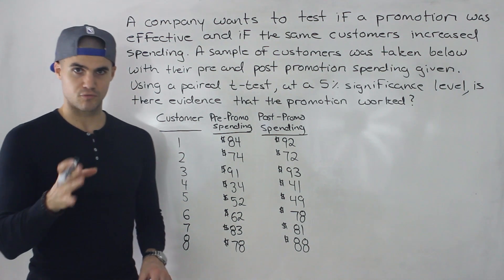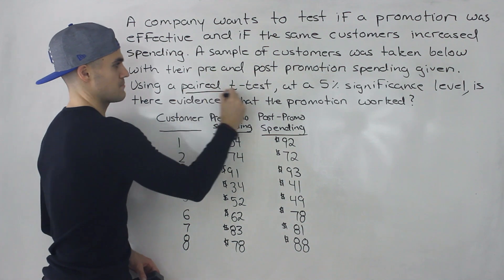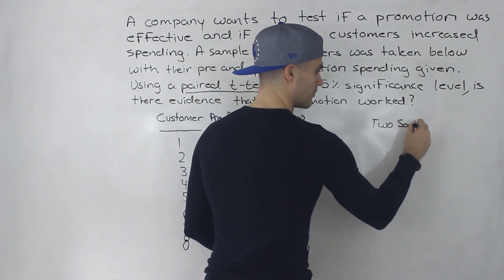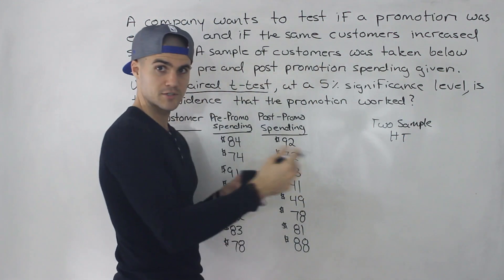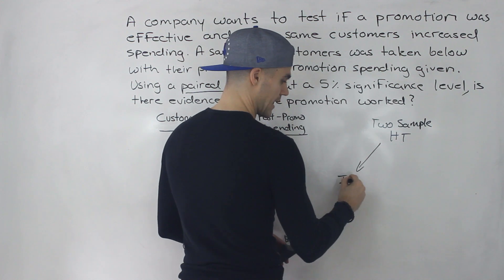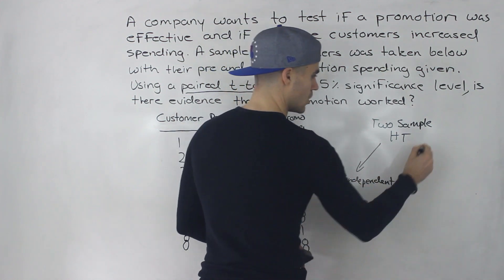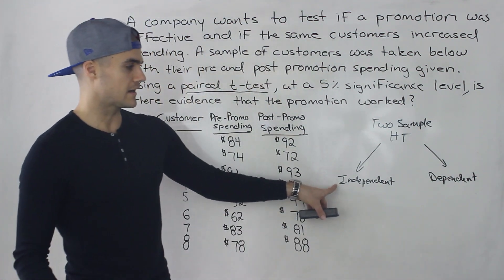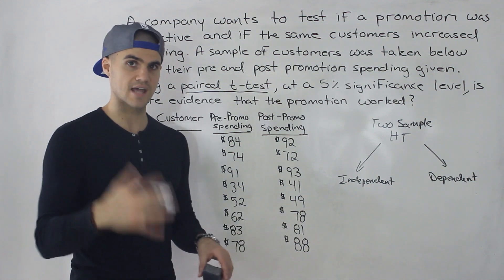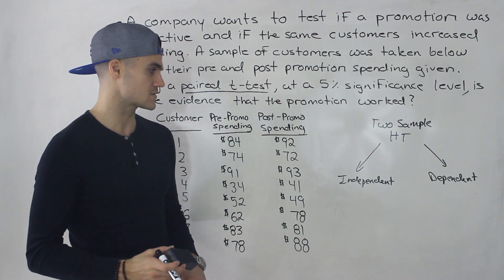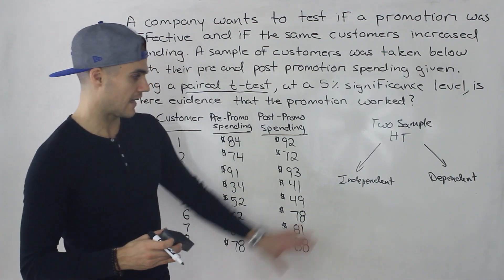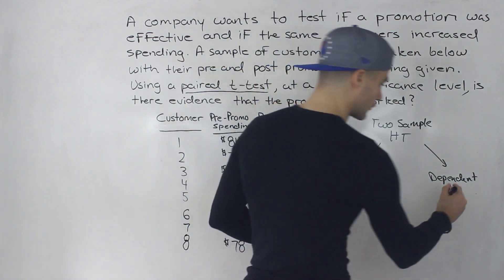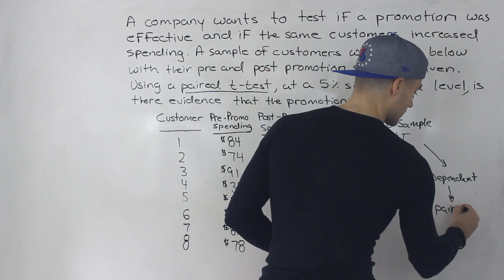Before getting into this example, we're going to be doing a paired t-test. From the overview video on two-sample hypothesis testing, we split the two samples into two groups: independent samples or dependent samples. For independent samples, we already went through examples — the z-test, the pooled variance test, the non-pooled variance t-test, and the f-test for variances. Now we're going to work with dependent samples, which means we do a paired t-test.